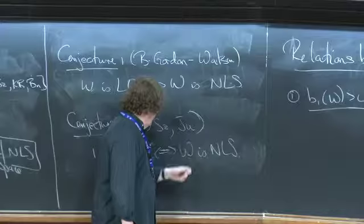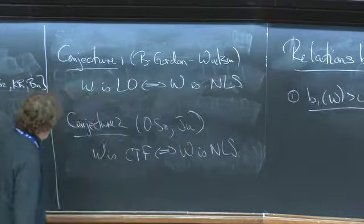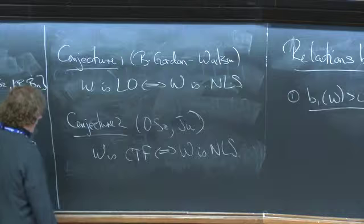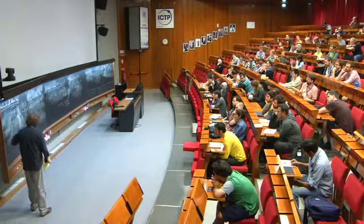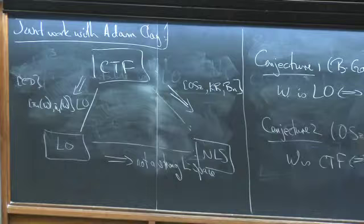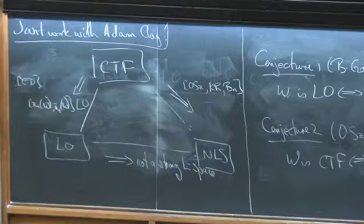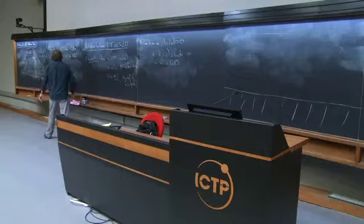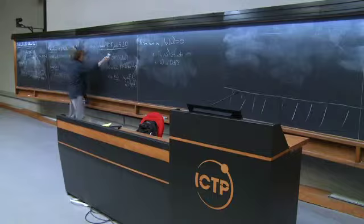And the first time I saw this written down as a conjecture was in a survey article of Juhász, but I really don't know if he was claiming credit for the conjecture or not. At any rate, here it is. The conjecture, so conjecturally then each of these extremely quite different, quite disparate concepts, properties for a three-manifold are equivalent. Okay, and there's been a lot of, I'll talk about some evidence now. And there's been a lot of efforts to try to generate examples. There's been a lot of effort to find counterexamples, but they're still standing, the conjectures, as we speak.